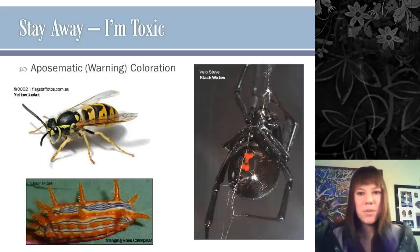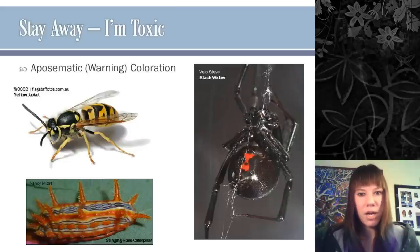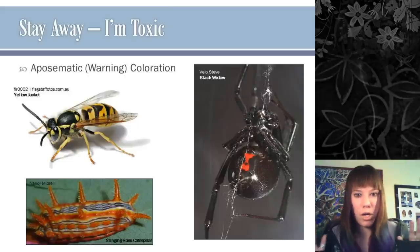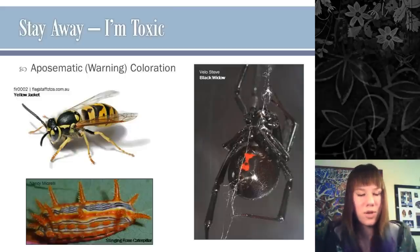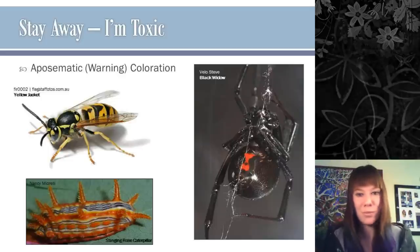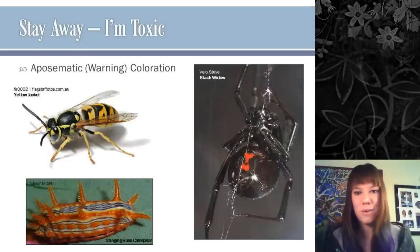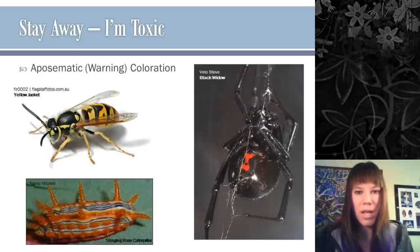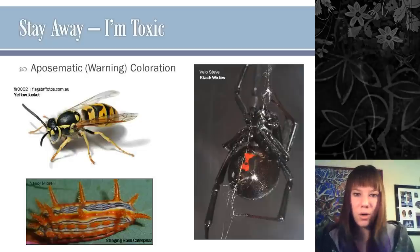Some crafty females of one species will mimic the available flash pattern of a different species' female. When the male of that other species visits, they obviously can't mate, but she eats him — a clever way of tricking food to come to you. Sometimes insects communicate to us too: when a bee flies by and you leave it alone because it's black and yellow, that's visual communication.